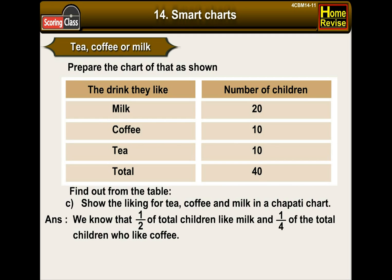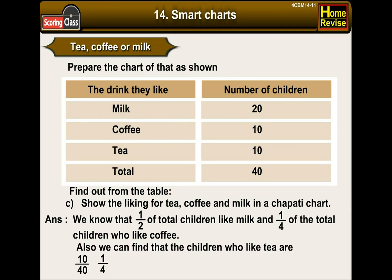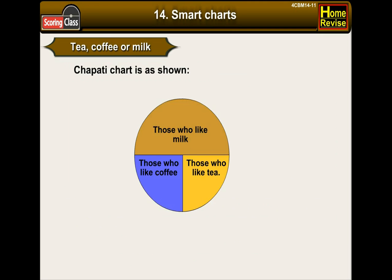We know that half of total children like milk and one-fourth of total children like coffee. Also, children who like tea are 10/40, that is one-fourth of total children. So the chapati chart shows three sections: those who like milk, those who like coffee, and those who like tea.